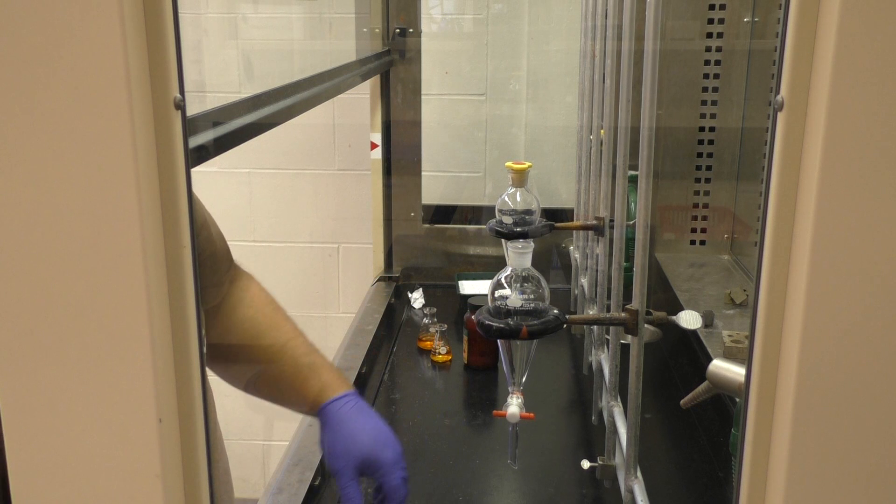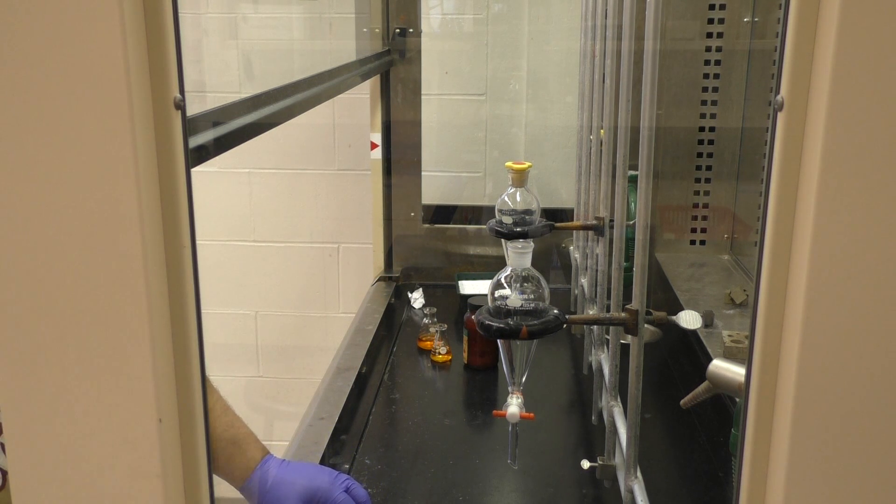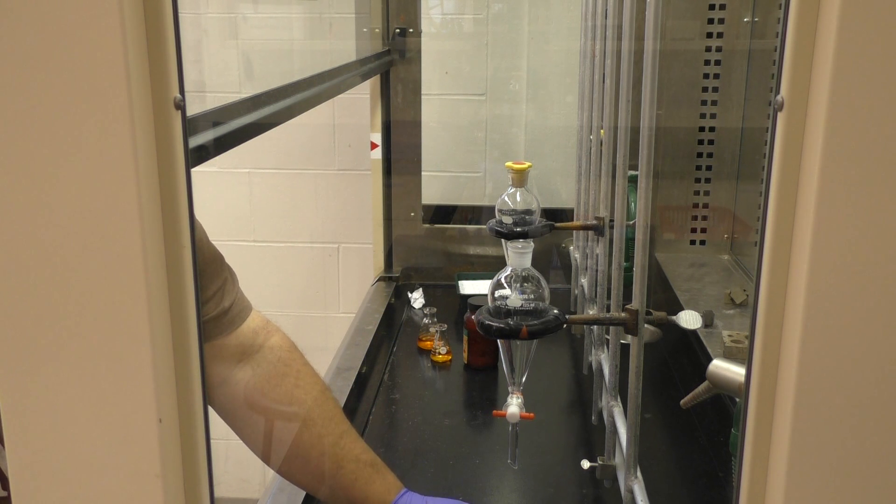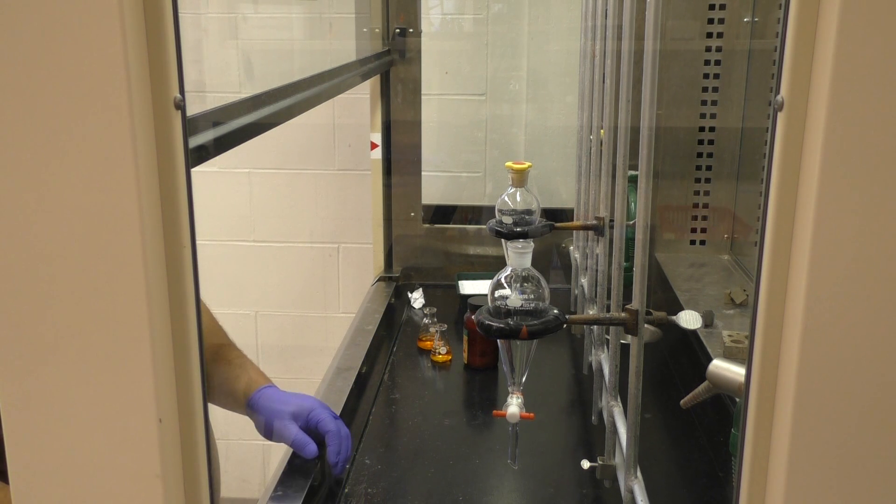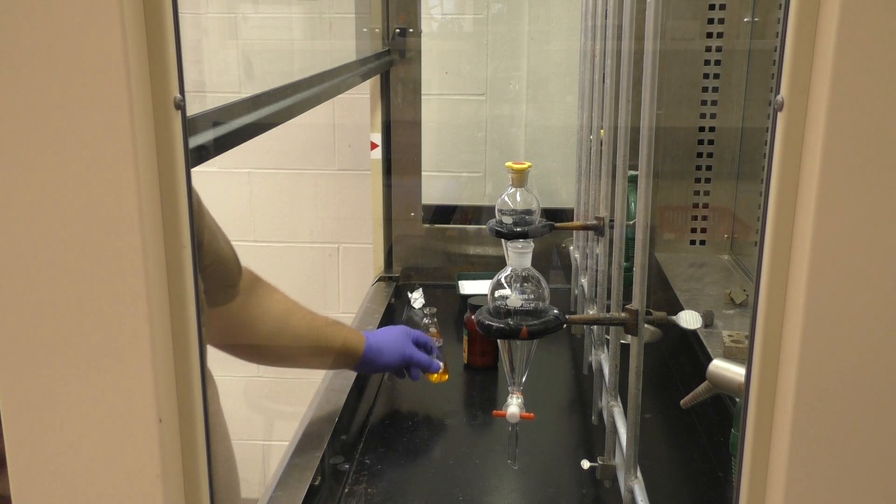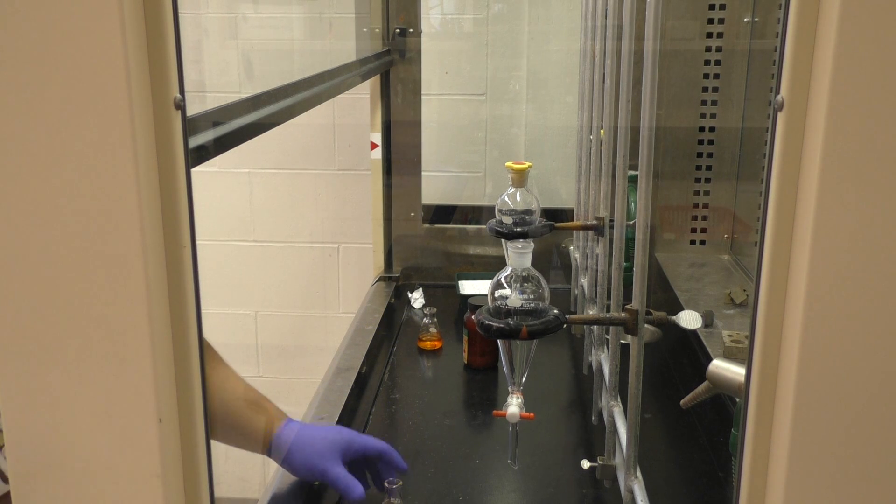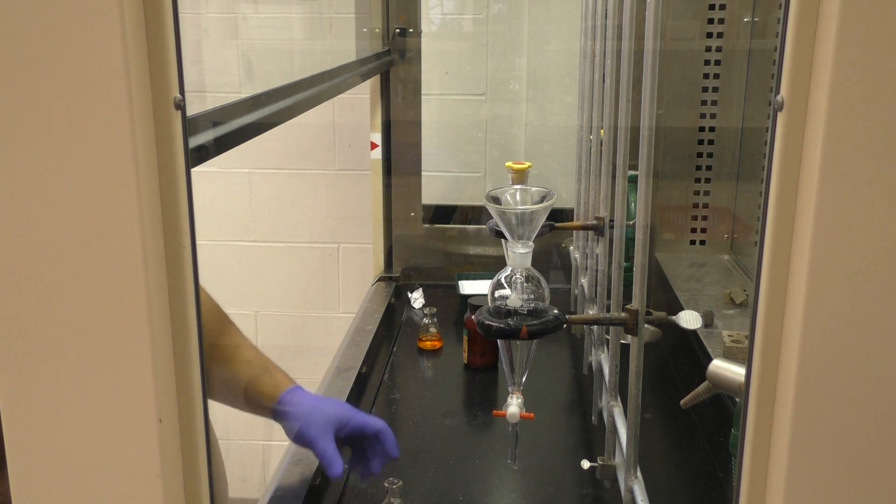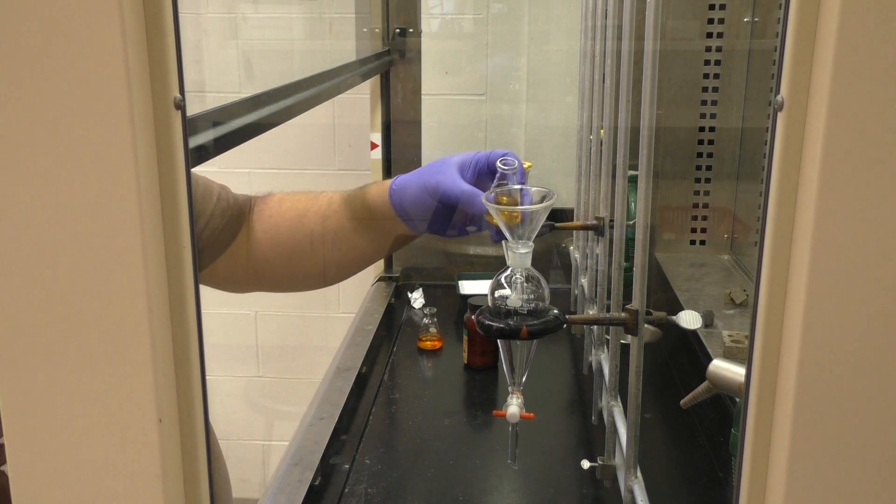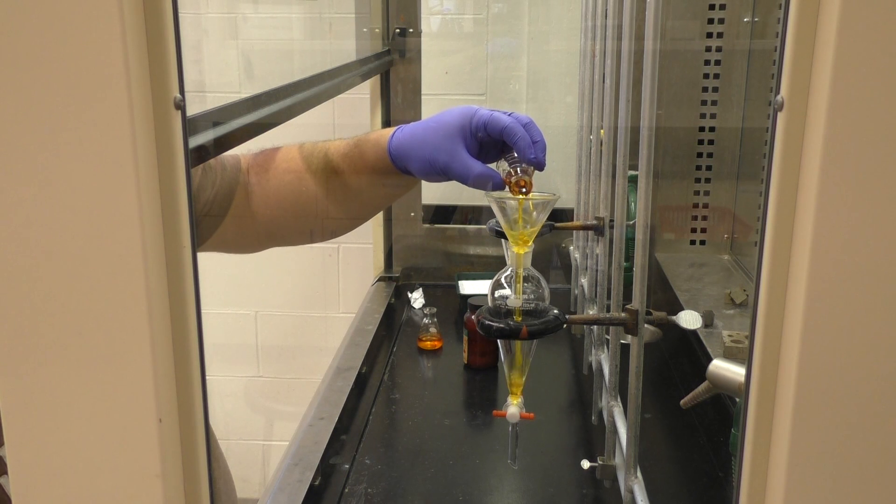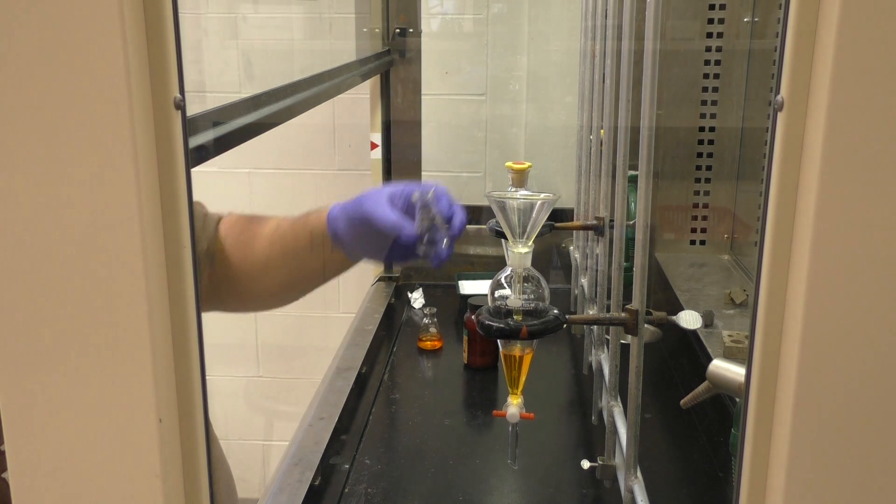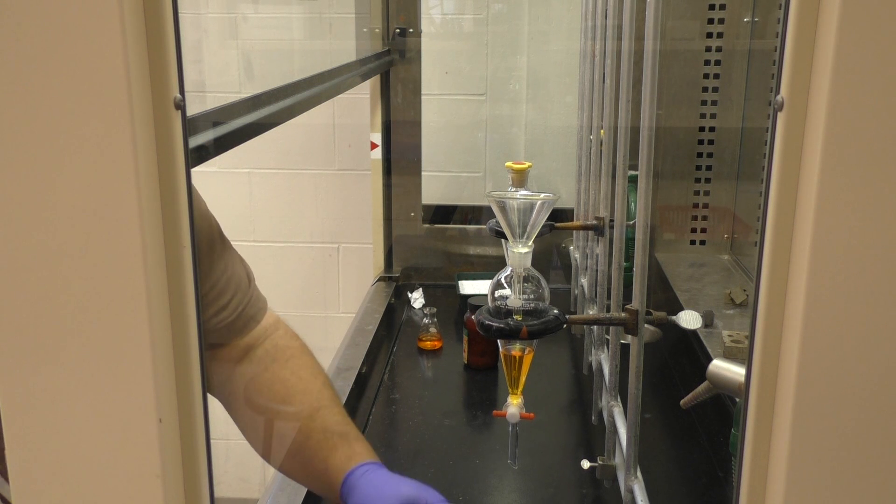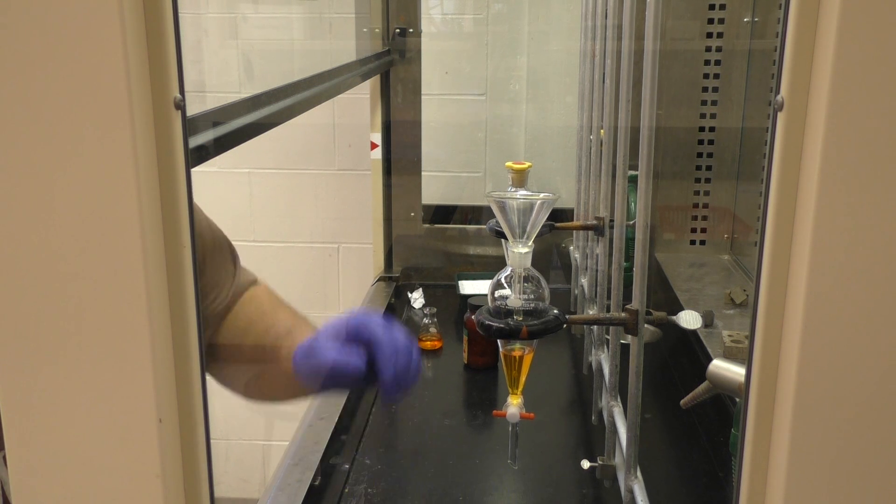You're going to need some glassware, beakers, or Erlenmeyer's to, on the one hand, collect the stuff, but then also to pour the material in. And you can use the glass stem funnel to help prevent spilling. And in this case, for this video, I've got an organic dye, or a chromophore, and we've dissolved it into an organic solvent.